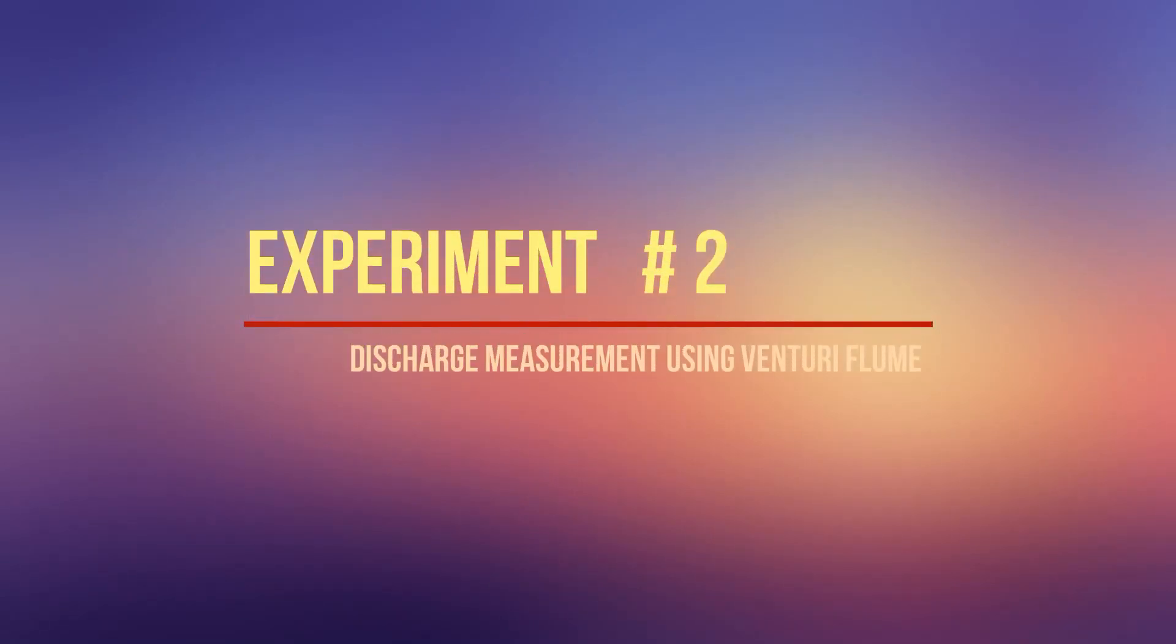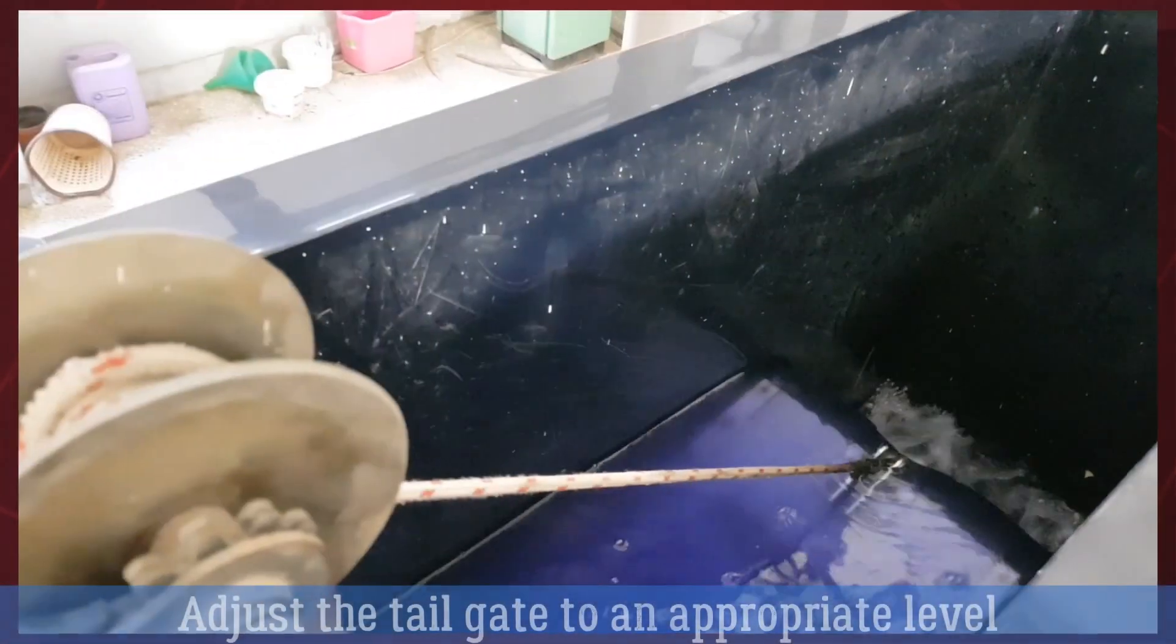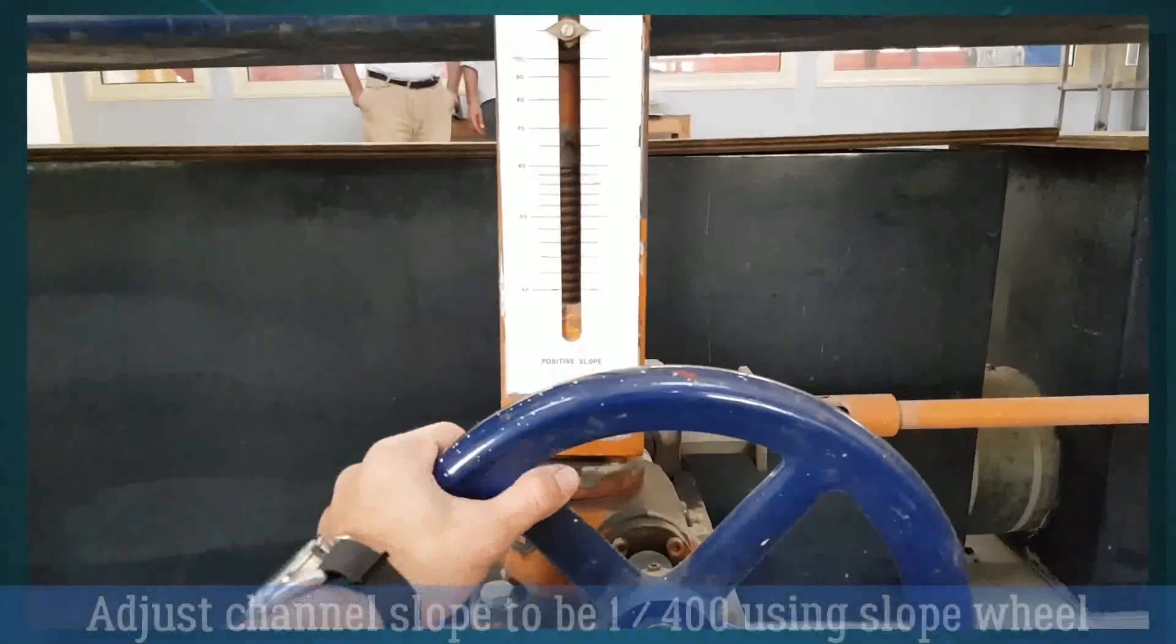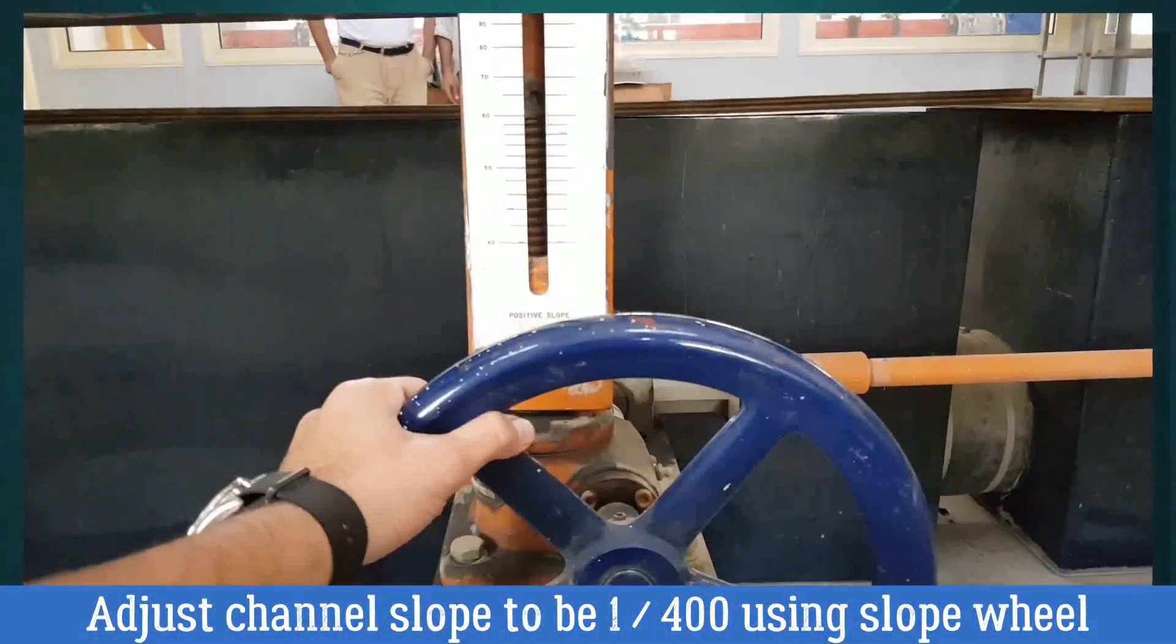Experiment number two, discharge measurement using venturi flume. Adjust the tailgate to an appropriate level. Adjust the channel slope to be 1 over 400 using the slope wheel.